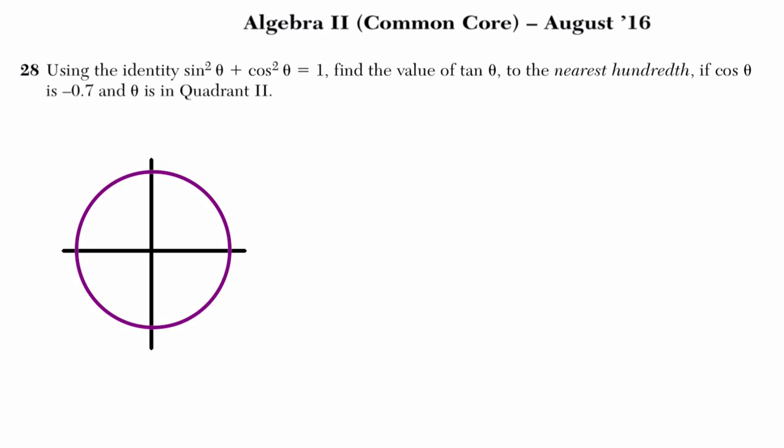Let's have it be purple. So this circle here, we call it the unit circle, and that means that the radius of this circle is 1.